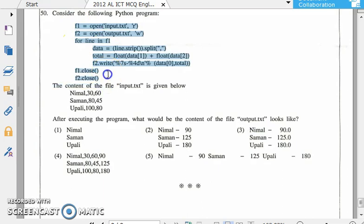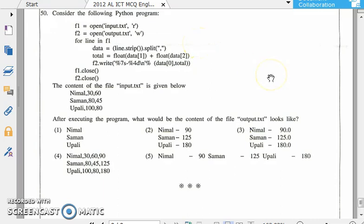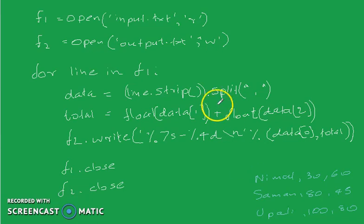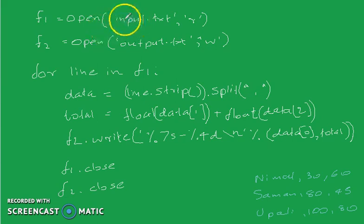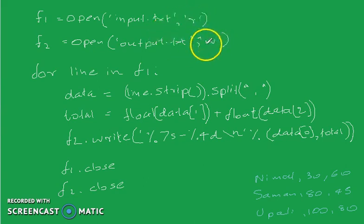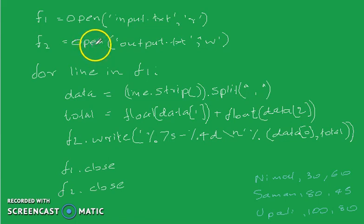We have input given by the output.txt. If you want to open a command in Python, you can open the file as input.txt and open the file as 'r' as readable. If you want to open the file as 'w' as writable.